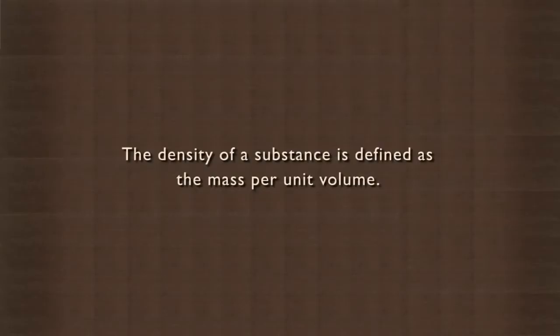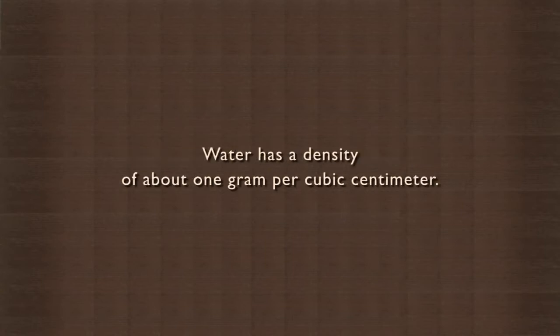The density of a substance is defined as the mass per unit volume. Water has a density of about 1 gram per cubic centimeter. If an object has a greater density than water, then the object will sink in water. However, if the object has a lower density than water, the object will float.